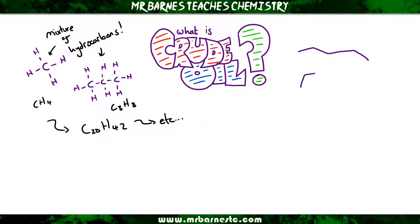It doesn't just have to be chains — it can also be things called rings. So you can have ring compounds with carbon and hydrogen in as well.